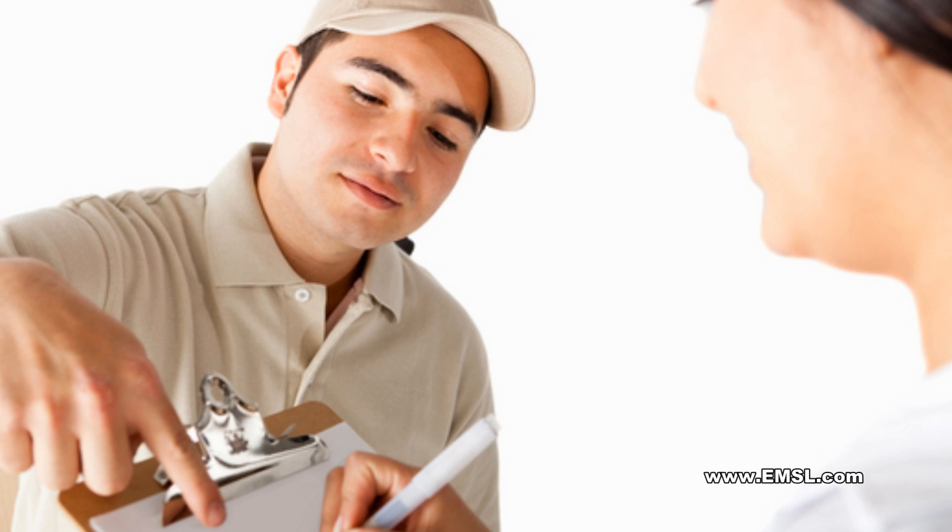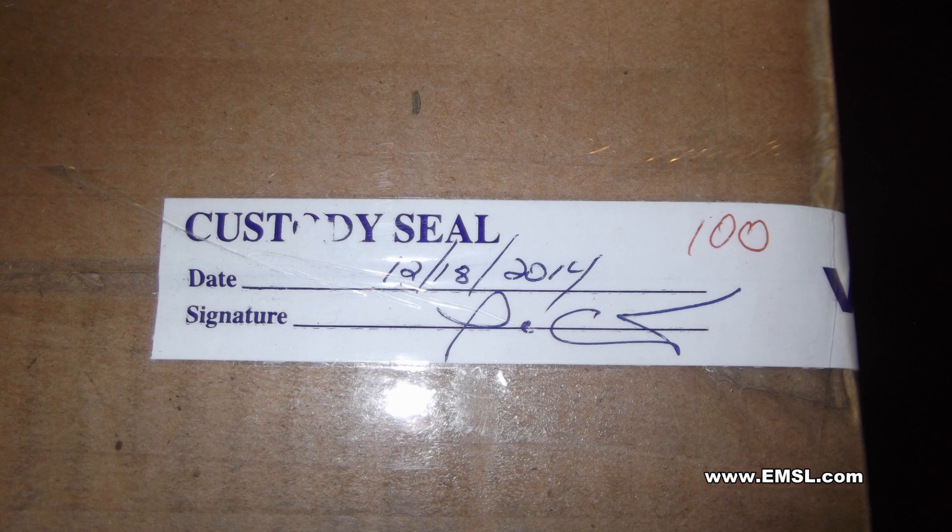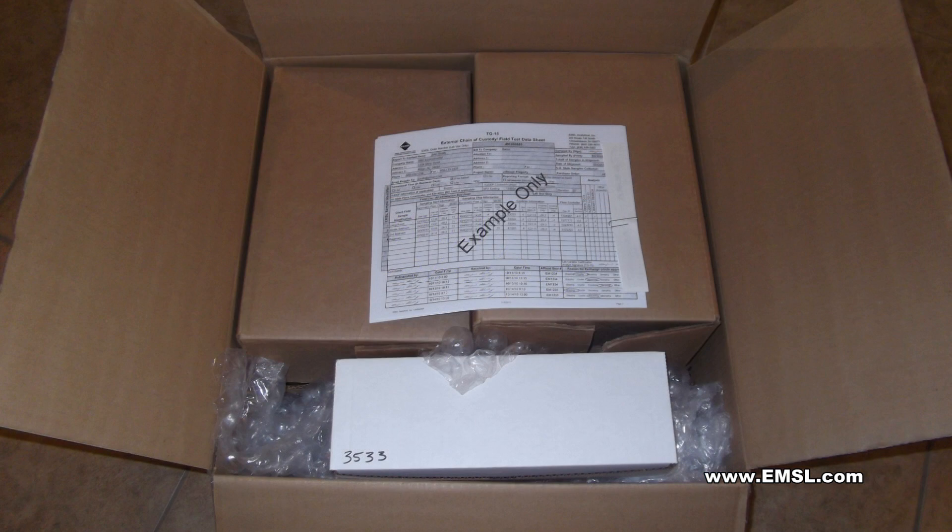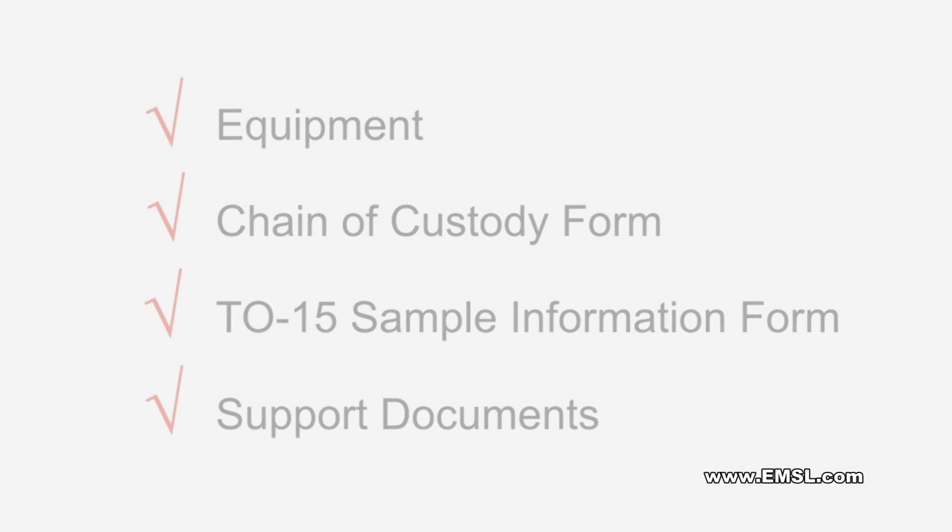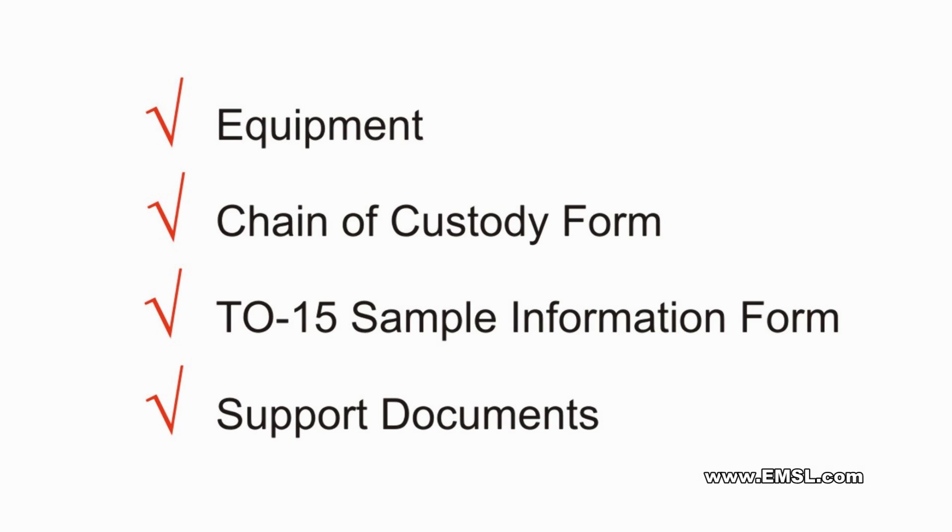When the canister package arrives, be sure the custody seal has not been broken. Open the packaging and remove the equipment, chain of custody form, TO15 sample information form, and support documents.